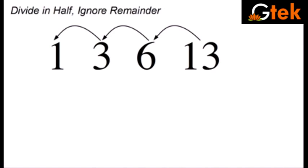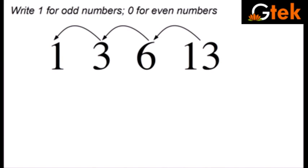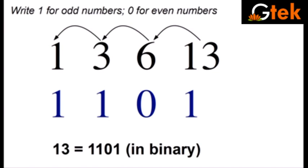So now I am going to write the remainders. Write 1 for odd numbers or 0 for even numbers. So 1 is obviously an odd number, so I am writing 1. And 3 is already an odd number, so writing 1. 6 is an even number, so writing 0. 13 is my odd number, so I am writing 1. So this is the answer for 13. That is 13 is equal to 1101 in binary form.